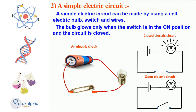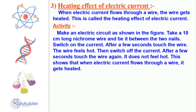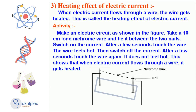Knowing the basics of electrical circuitry is essential. When an electric current flows through a wire, it causes the wire to heat up. This phenomenon can be demonstrated with an experiment requiring a 10 cm long nichrome wire, two nails, and the circuit shown in the figure. Connect the wire between the nails, switch on the current, and after a few seconds the wire can be touched and will be observed to be hot. Once the current is switched off, the wire will not feel hot anymore, which serves as evidence of the heating effect of electric current.